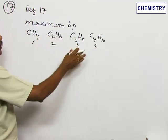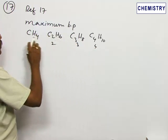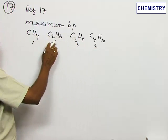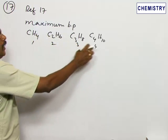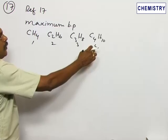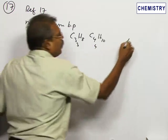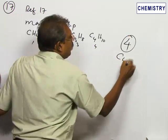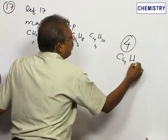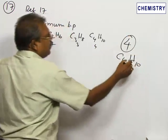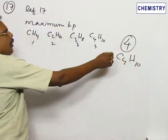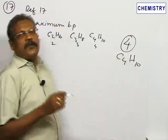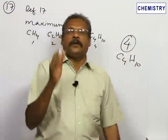So, going through the four alkanes — the first one is methane, ethane, propane, and butane. So, option 4, C₄H₁₀, must have the highest boiling point. So, go for option 4.